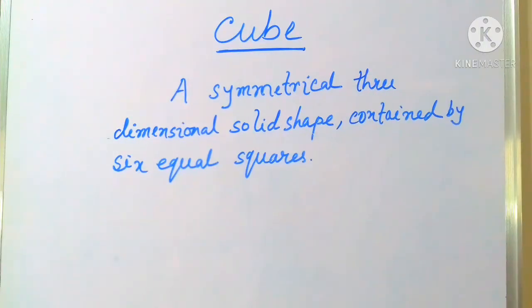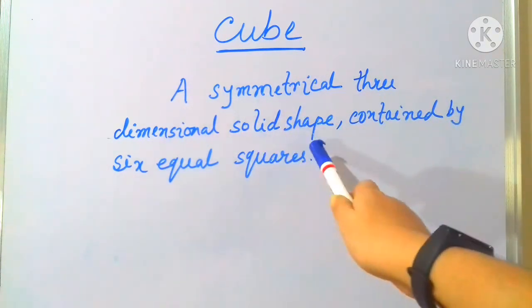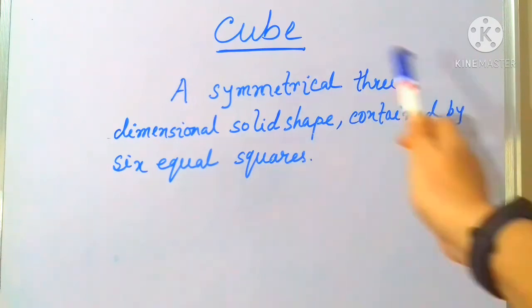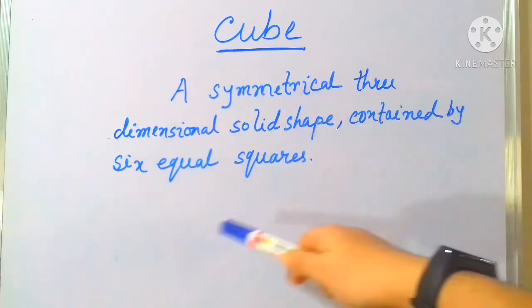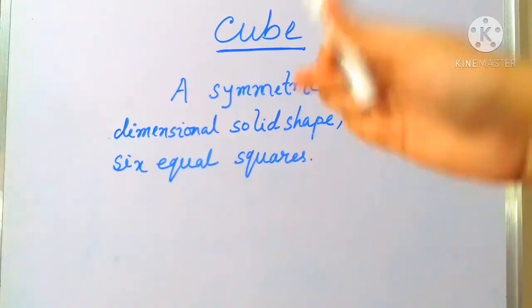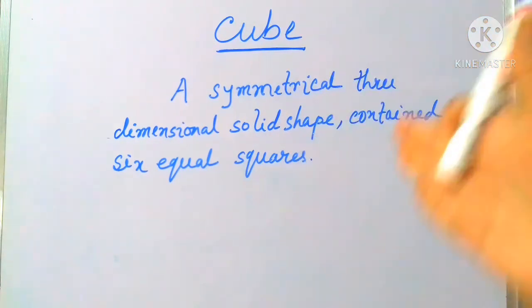First we have to discuss about what is a cube. A symmetrical three dimensional solid shape contained by six equal squares. You all know that in my previous videos I discussed about triangles, circles, quadrilaterals and those all are two dimensional shapes because those all have length and breadth and here cube is one type of solid shape.